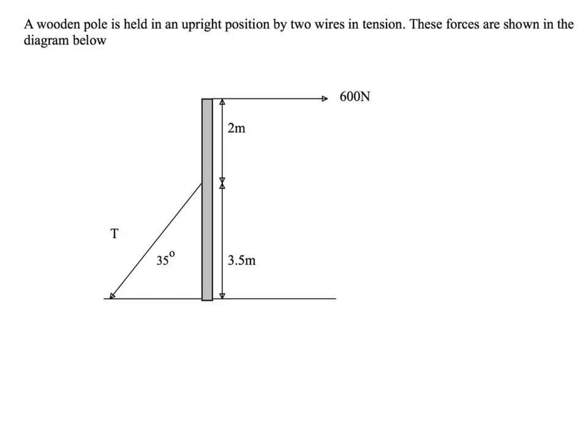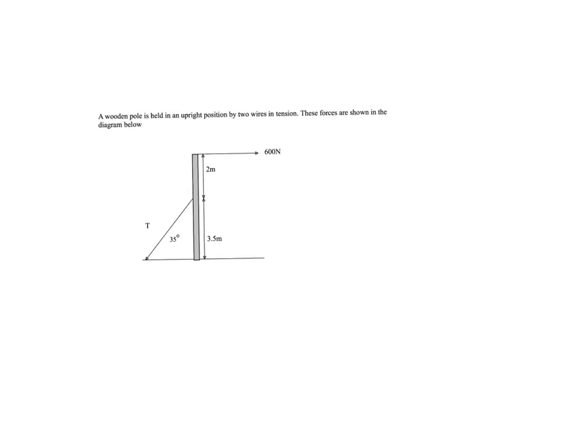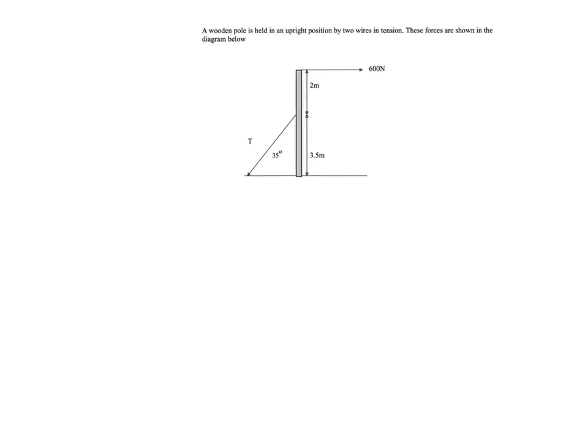This final problem is about as hard as it gets at A-level when applying the principle of moments. You're told the wooden pole is held upright, so it's not turning, meaning the total clockwise moments equal the total anticlockwise moments. The complication is that T is at an angle — it's not perpendicular — which is what differentiates A-level from GCSE.